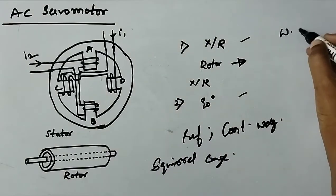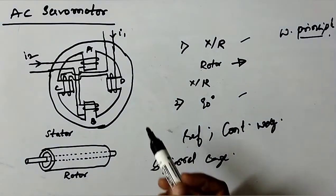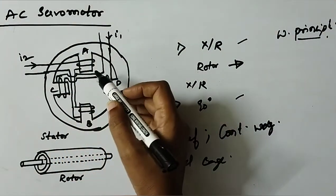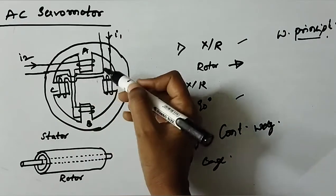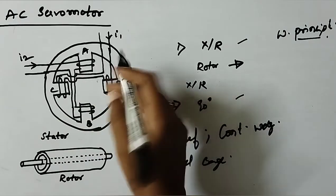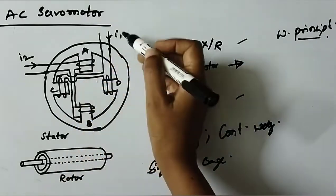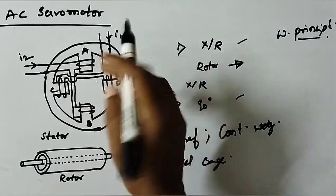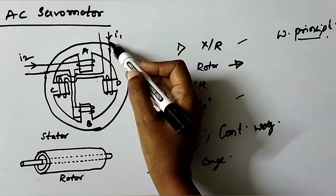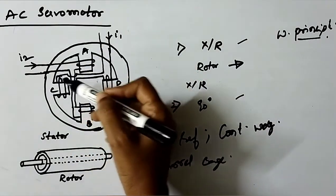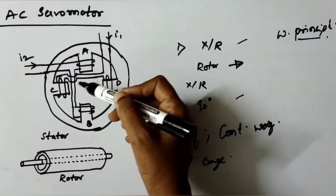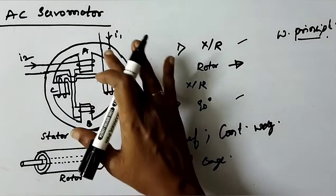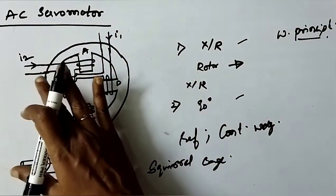Now, working principle for this servo motor is: the stator windings are excited by voltages of equal RMS magnitude and 90 degrees phase difference that results in exciting currents I1 and I2 that are phase displaced by 90 degrees and have equal RMS values. These currents will give rise to a rotating magnetic field of constant magnitude and the direction of rotation depends on the phase relationship of the two currents I1 and I2.